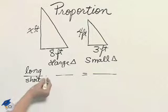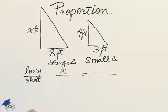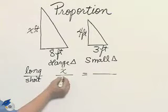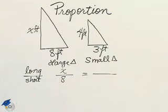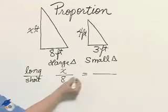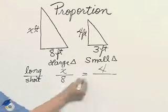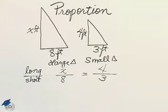Filling it in from the large triangle, the long side is X feet. The short side is eight feet. On the small triangle, the long side is four feet. The short side is three feet.